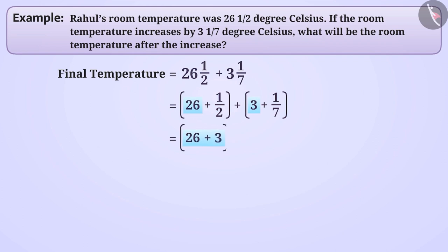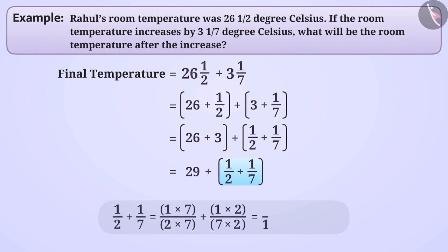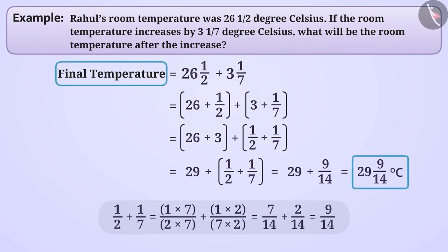We can write 26 plus 3 plus 1 by 2 plus 1 by 7 which is equal to 29 plus 1 by 2 plus 1 by 7. Now we will add 1 by 2 plus 1 by 7. Now we will put 29 and 9 by 14 together so that we get the result 29, 9 by 14. Isn't this the fun method?